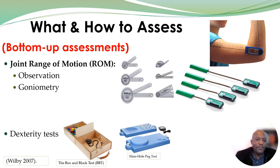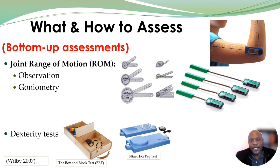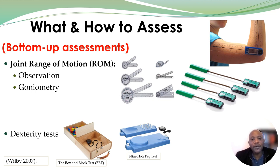Goniometers come in different forms and shapes. There are manual ones, and then there are electronic goniometers where you attach the two parts — one distal to the joint and one proximal to the joint — and then request the service user to move the joint so you can measure the joint range of motion.